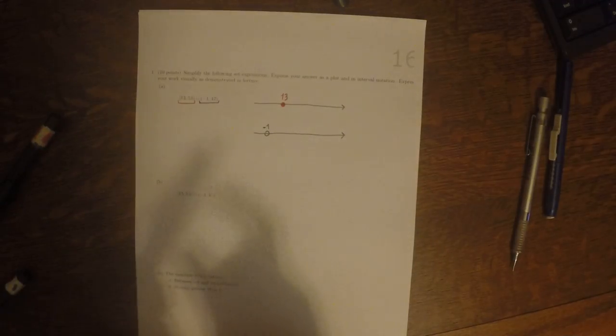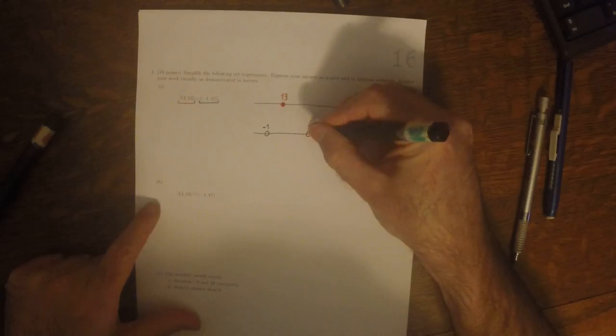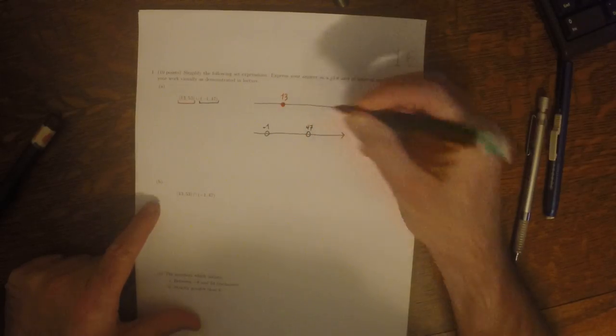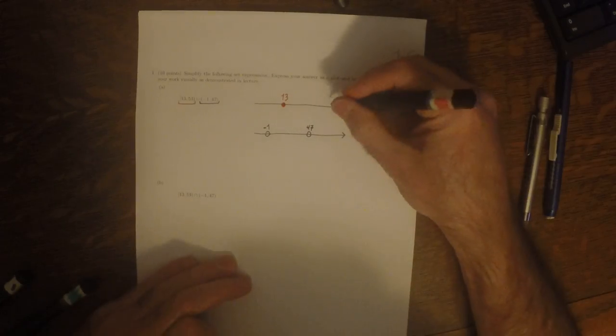Of the remaining, 47 is the smallest and it should be open. Of the remaining, 53 is the smallest and it should be open.